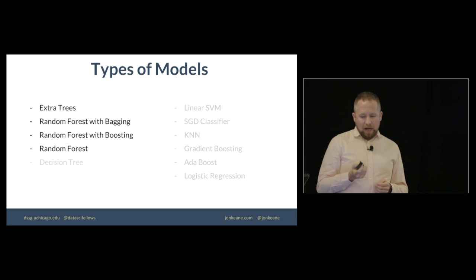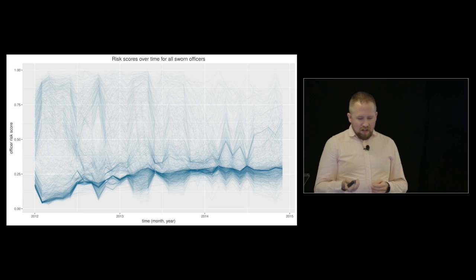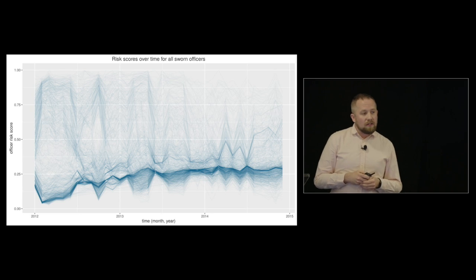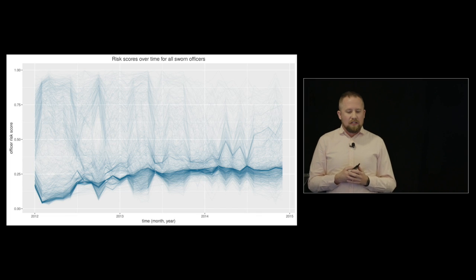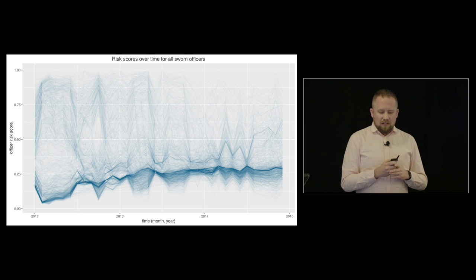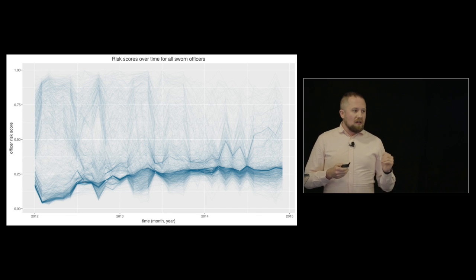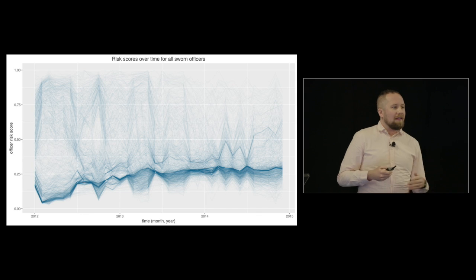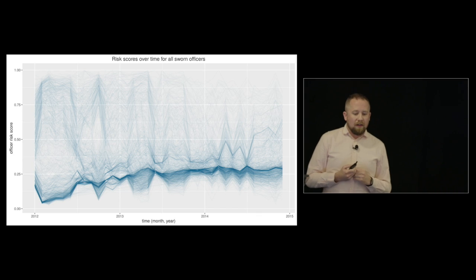But so let's look at what this looks like in practice. So here is a plot that shows the risk scores for every officer for the Nashville Police Department over time coming out of one of our models. So the x-axis is time. Each line represents an officer. If they're at the top of the plot, they're at high risk. If the bottom of the plot, they're at low risk.